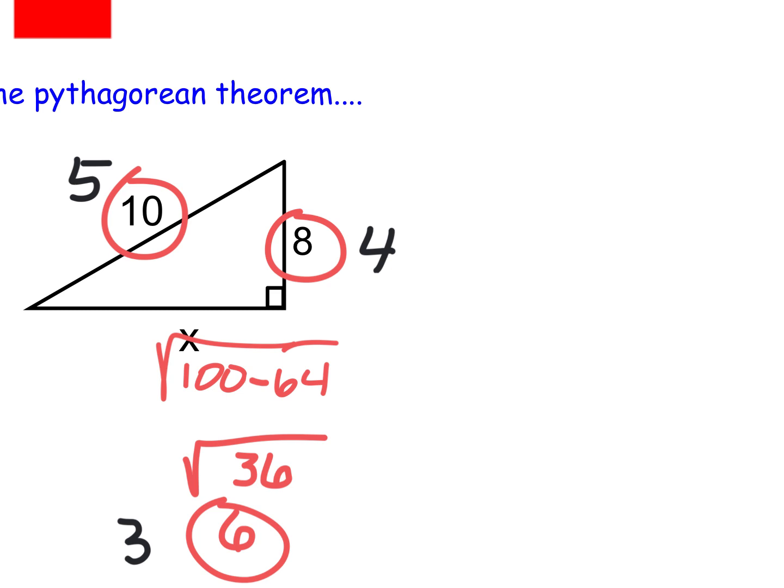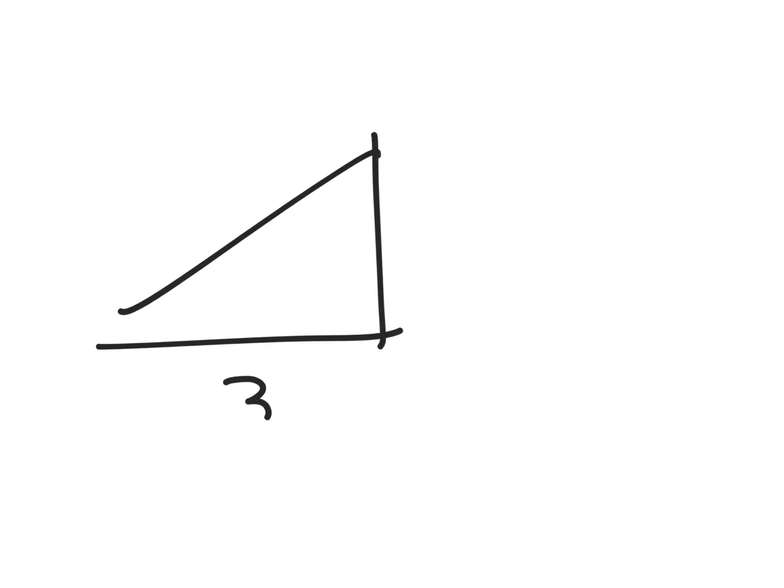So if I give you a triangle and say this is 3 and this is 2, what's that other side? It's not 1 — don't just assume that. Do that square root thing. Figure out whether you should add or subtract. Once you practice this a couple times, finding that third side will be easy, and I guarantee there will be one on the test.